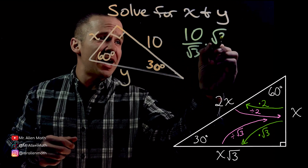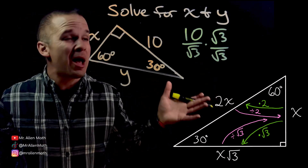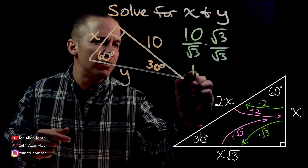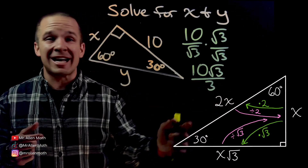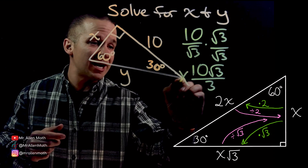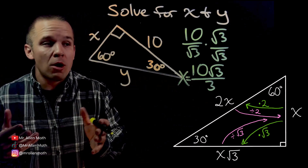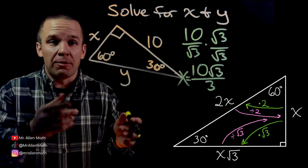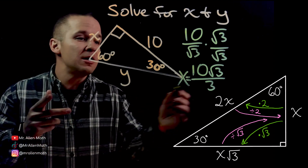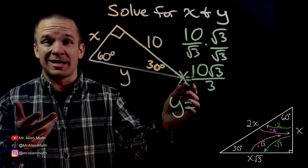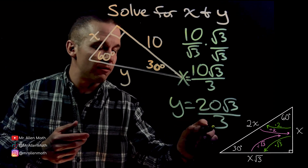I've got to rationalize this because you can't have square roots in the denominator — I've got to follow the rules. I get 10 root three over three. Can I simplify? 10 is not divisible by three, so that's it for X: X equals 10 root three over three. Now to get Y, I just double it. If I got my short side, I double it to get my hypotenuse in a 30-60-90. So Y equals 20 root three over three. We're done.